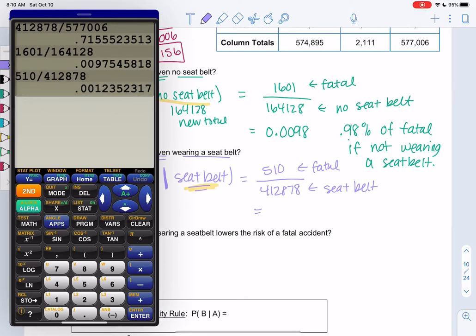We're going to do 510 divided by 412,878. This is smaller, this is 0.0012. So only a 0.12% chance of fatal with a seatbelt, if wearing a seatbelt.